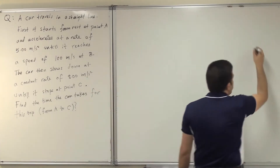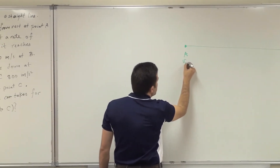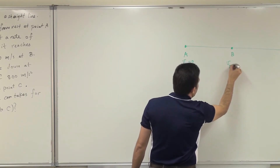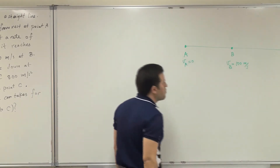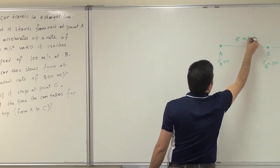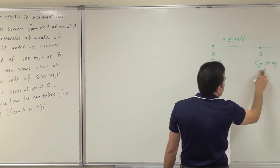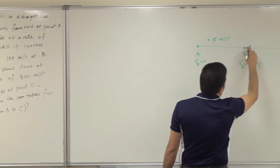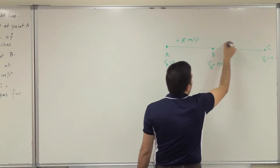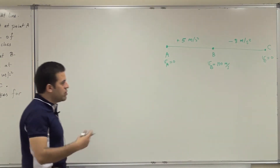A simple sketch will simplify the question. The car travels from point A where initial velocity is 0, then reaches point B with velocity 100 meters per second, accelerating at 5 meters per second squared — positive, meaning it's gaining speed. After reaching point B with 100 meters per second, it loses speed until it arrives at point C, where velocity equals 0, decelerating at 8 meters per second squared — negative acceleration, meaning it's slowing down.